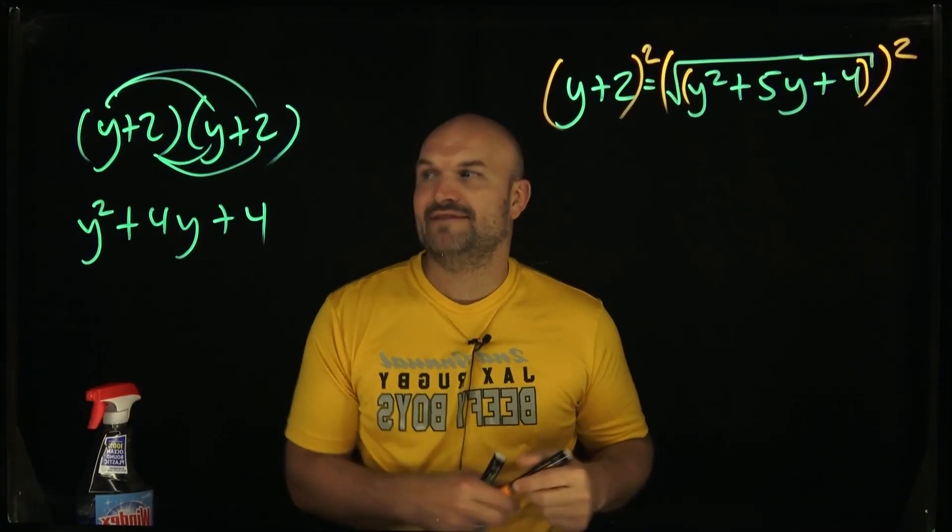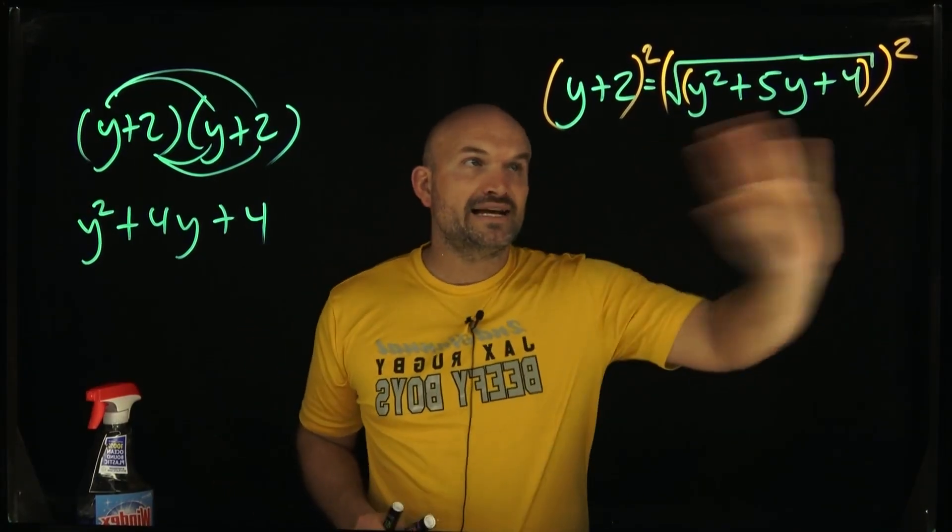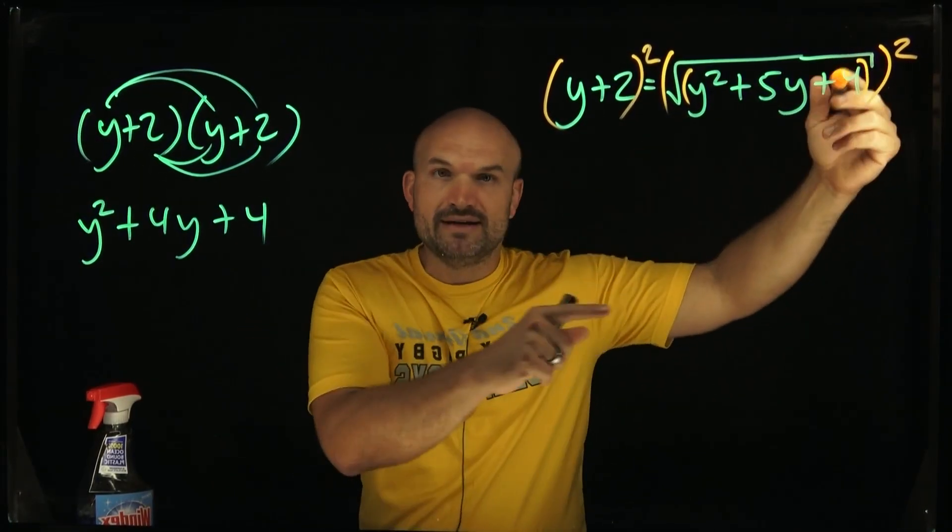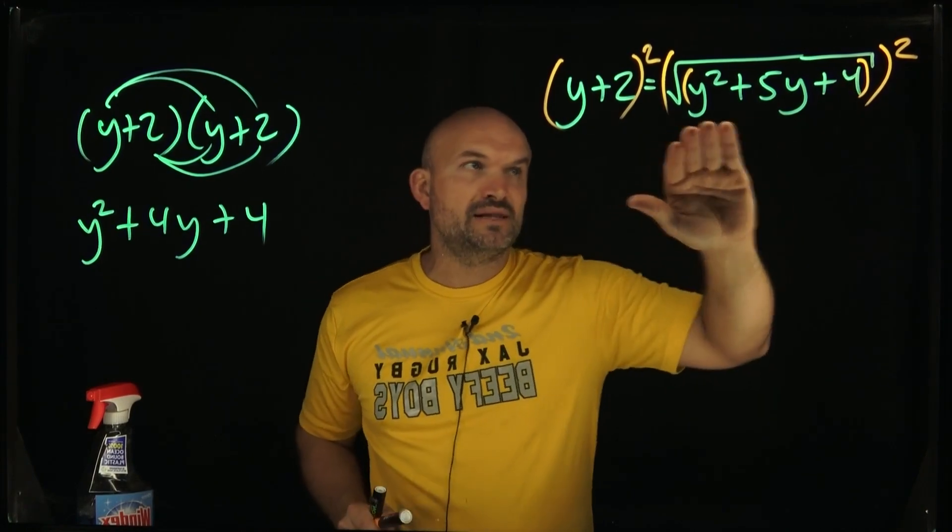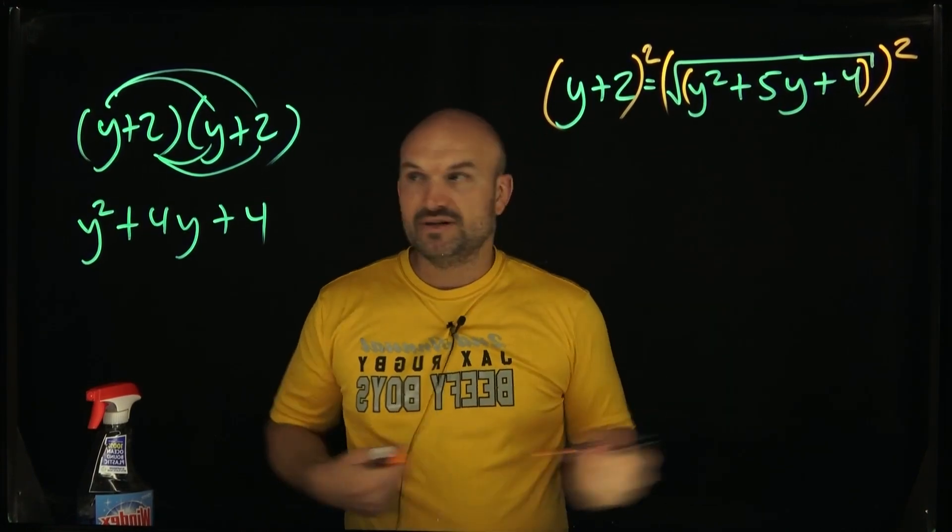Now here on the left hand side we're going to have y squared plus 4y plus 4, and on the right hand side, remember the square root and the squaring those undid each other, so therefore I'm just going to be left with y squared plus 5y plus 4.